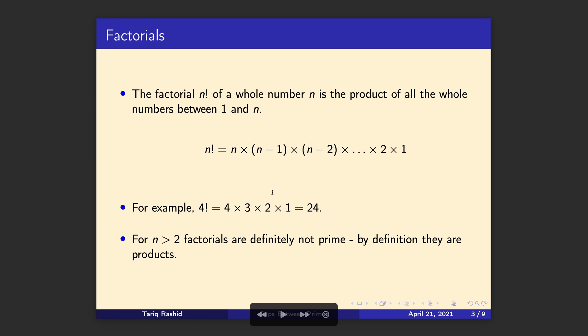The other thing which is obvious in some sense is these are definitely not prime because they are by definition products of other numbers, whole numbers. There are some exceptions which are the very small ones so 2 factorial is 2 times 1 which is 2, 1 factorial and 0 factorial but apart from those, for n more than 2 they are not prime.